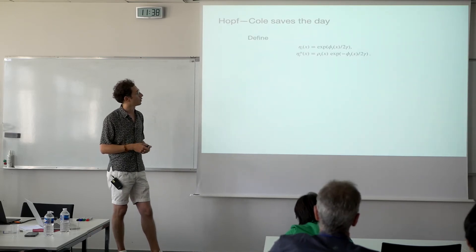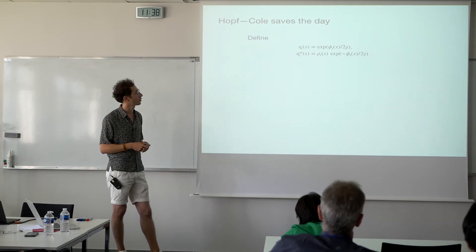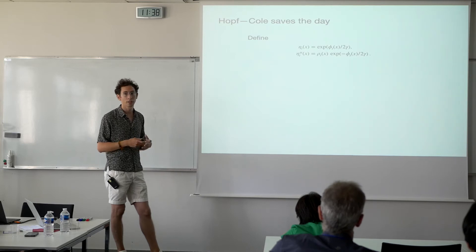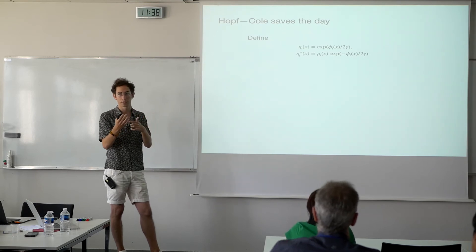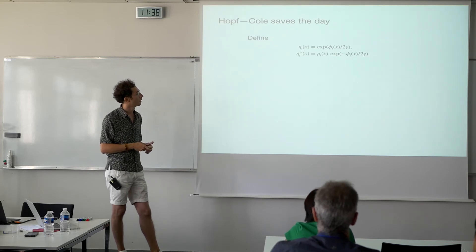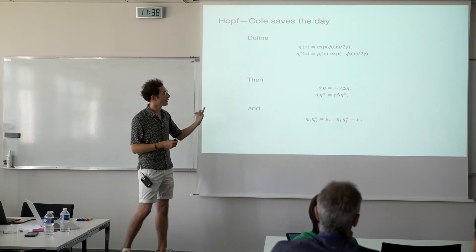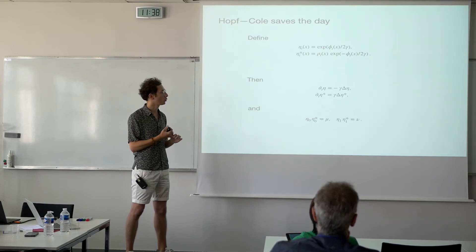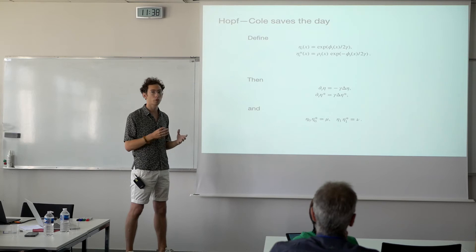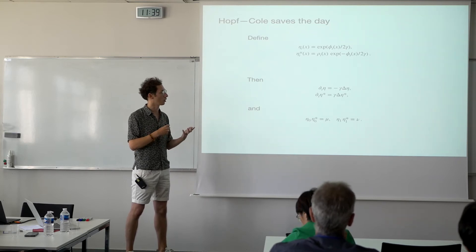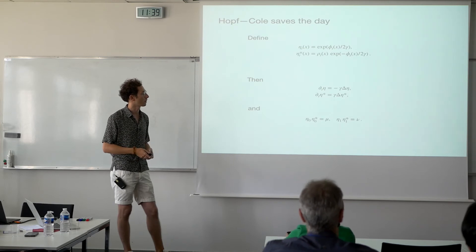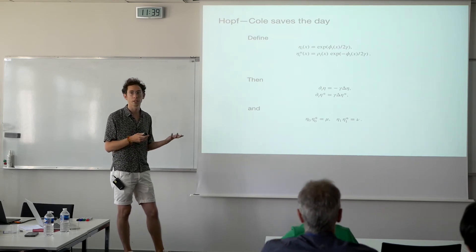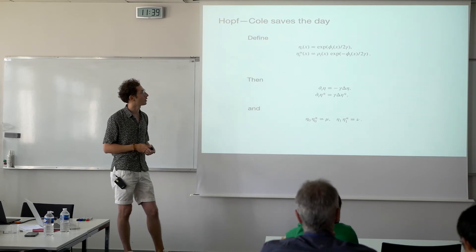Even though these two PDEs are classical individually, when coupled you might not expect explicit solutions. But it turns out there is a transformation — a change of coordinates — the Hopf-Cole transformation, which allows you to get explicit solutions. You change from the original variables ρ and φ into two new variables η and η*. Once you write the optimality condition in the new variables, you get a system of forward and backward heat equations — linear and, more importantly, decoupled. You can then integrate out the Laplacian and get Gaussian kernel solutions.